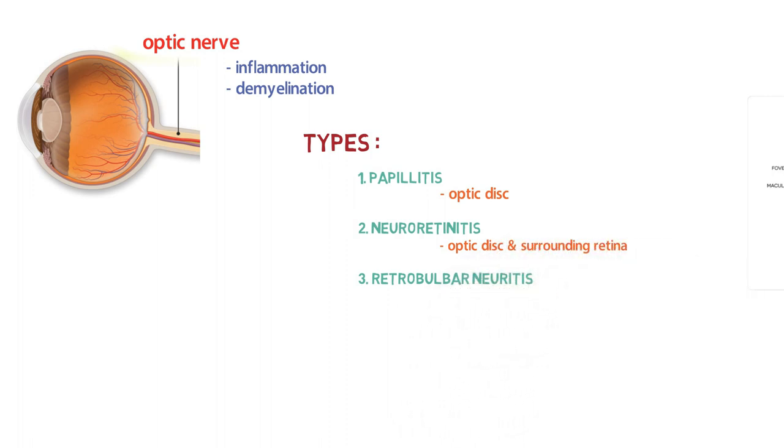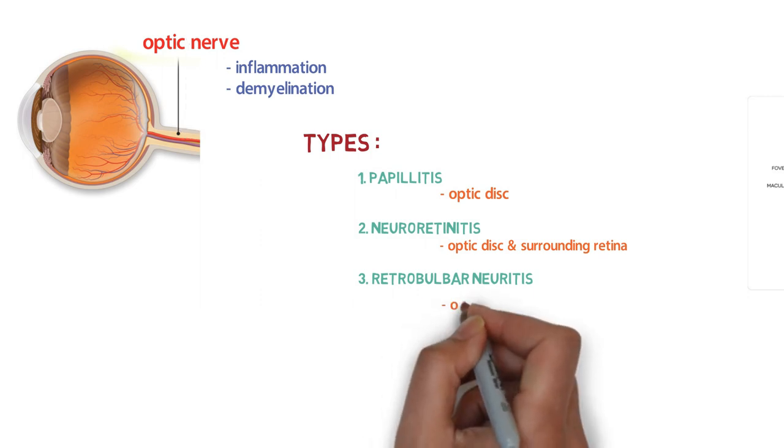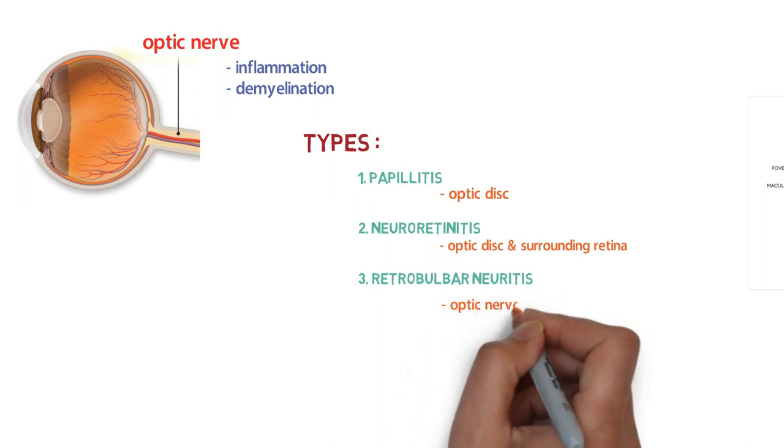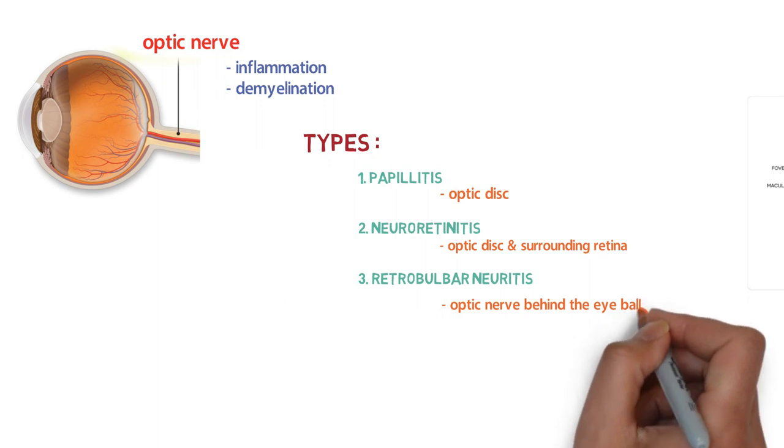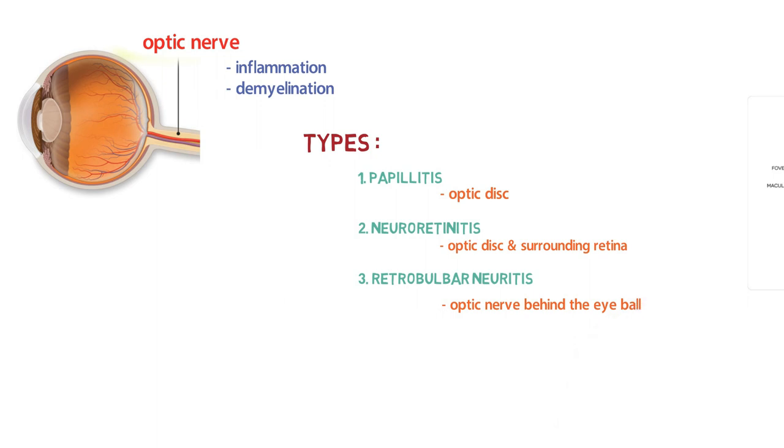What is retrobulbar neuritis? Look over this diagram - this is the optic nerve. In retrobulbar neuritis, it is characterized by involvement of optic nerve behind the eye wall. That is, there is inflammation and demyelination of optic nerve. This is retrobulbar neuritis.